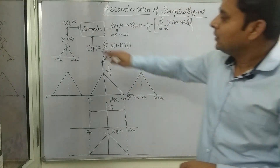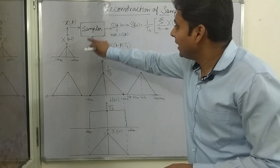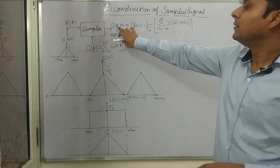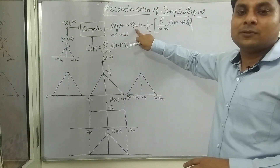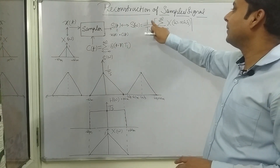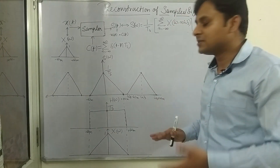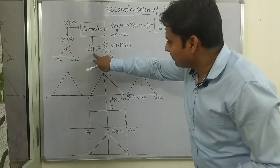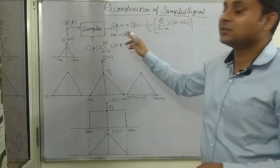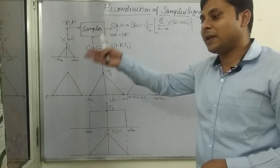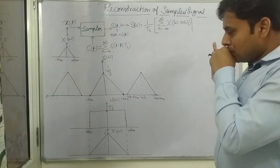A signal X(T) is given to the sampler, and with the help of the function C(T) it is multiplied with X(T) to give the sampled signal X_S(T). The sampled signal's frequency domain representation is: (1/TS) · summation from n = −∞ to +∞ of X(ω − n·ωS). C(T) can be represented as a summation of impulses: Σ δ(t − n·TS), which represents a pulse train, as explained in the previous lecture.